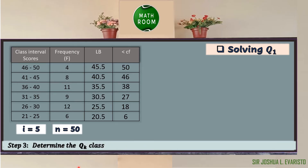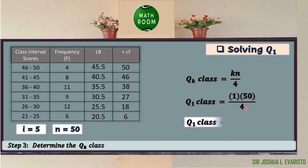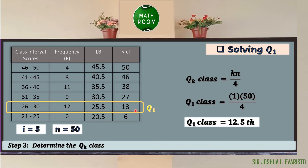Step 3: determine the Q sub k class before computing the quartile value. Using the formula Q sub k class = k × n ÷ 4, by substitution Q sub 1 class = 1 × 50 ÷ 4 = 12.5. Since 12.5 is between 6 and 18 in the cumulative frequency column, we choose the higher value, which is 18. Thus, the Q sub 1 class is found in the second class.